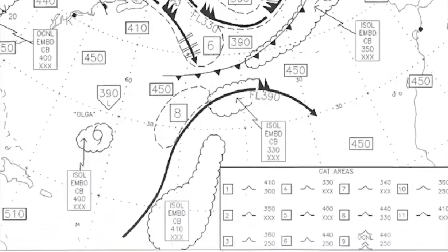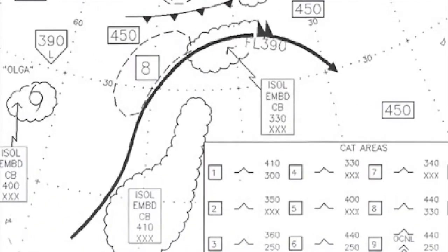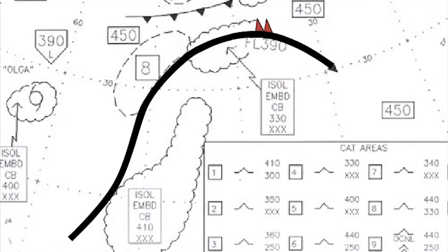Jet streams are identifiable on the WAFC SIG weather charts by black solid lines which have wind feathers indicating jet speeds at spot points, and the flight level at which the maximum speed is attained. The arrowhead on the end of each jet stream indicates the direction of movement of the flow. In our example, we have a jet stream which curves in a north-easterly direction, then gradually veers south-easterly. The jet stream reaches a peak speed of 100 knots at flight level 390.